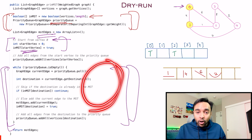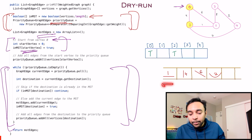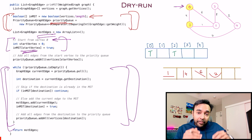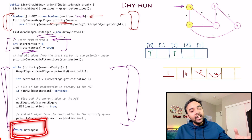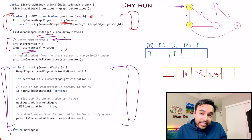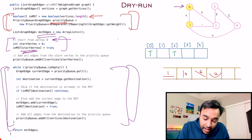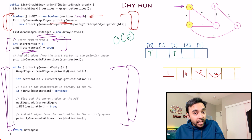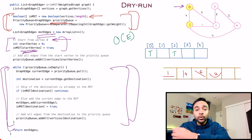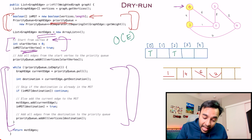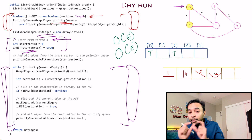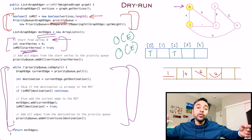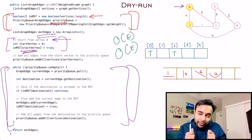This loop continues to run until your queue is completely empty. Once the queue is empty, you will have your complete minimum spanning tree in your MST edges, and you can simply return it. The time complexity of this algorithm is O(E), where E is the number of edges, because you have to iterate through every edge at least once. The space complexity is also O(E) because you need that space in your priority queue to store all of the edges at least once.